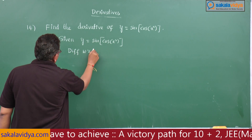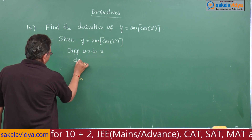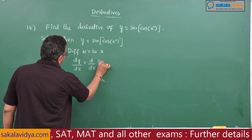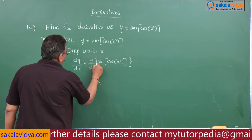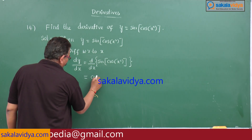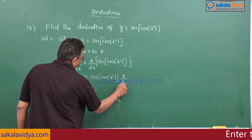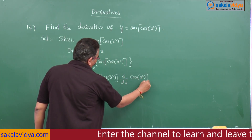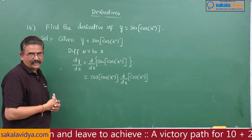Differentiating with respect to x: dy/dx = d/dx of sin(cos(x²)). First, write the derivative of sin — that becomes cos(cos(x²)) — then multiply by d/dx of cos(x²). This part of the sin derivative is now completed.